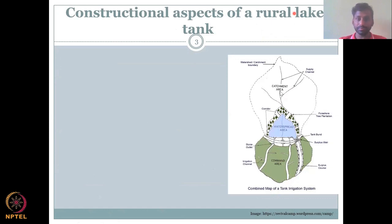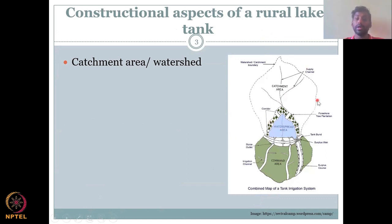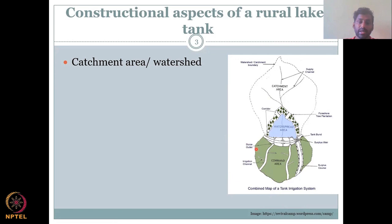Let's see how tanks are constructed. On the right you have a map of a tank irrigation system. First, you identify the catchment area — where rainfall will be captured and drained into the tank. Depending on the area and rainfall volume, you determine an appropriate storage size. You cannot put a very small storage for a large catchment because it will break the tank, but a tank that is too large will cause water to spread thin and evaporate rapidly. So the catchment and watershed area are determined first.